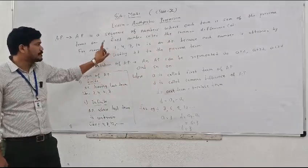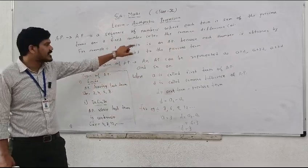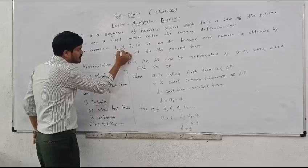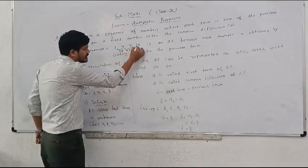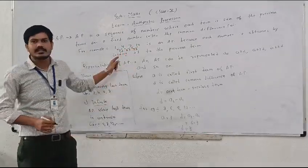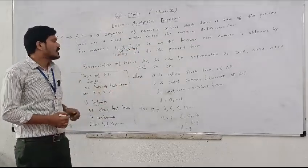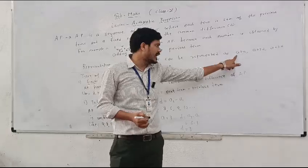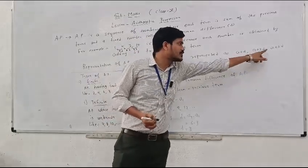For example, we have the AP 1, 4, 7, 10. This is an AP because each term has an equal gap of plus 3. We can represent AP in the form A, A plus D, A plus 2D, and A plus 3D.